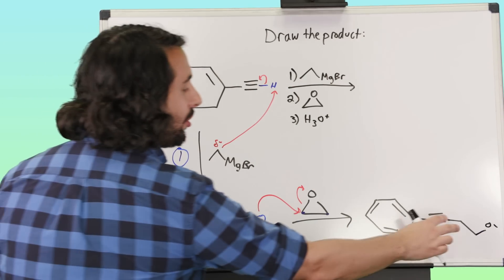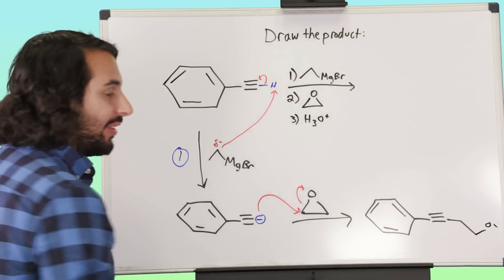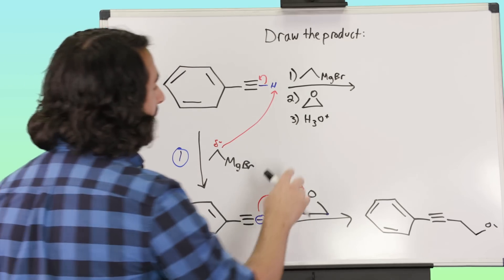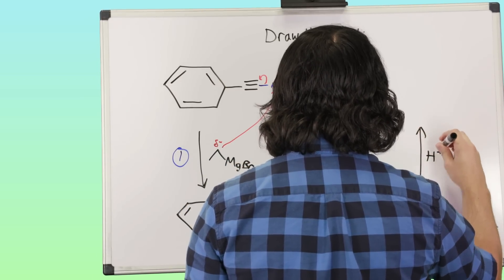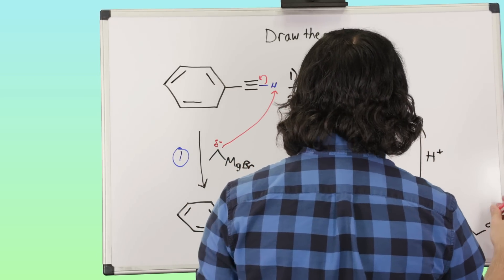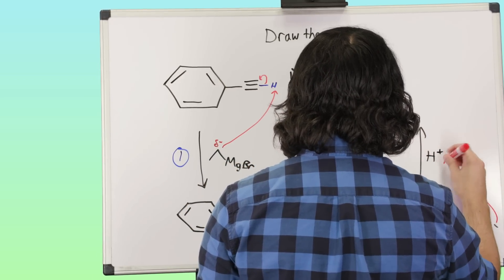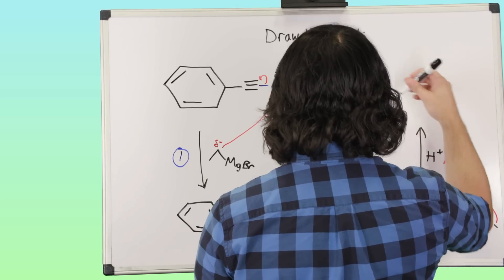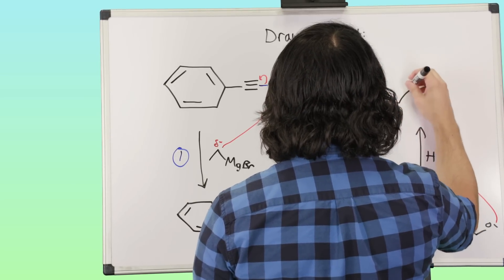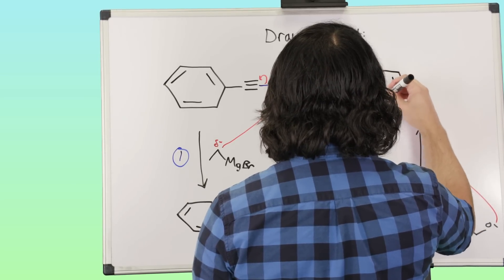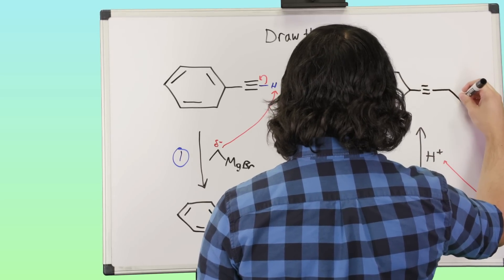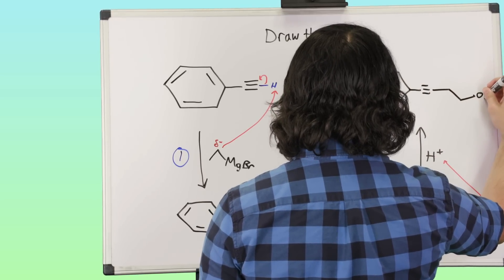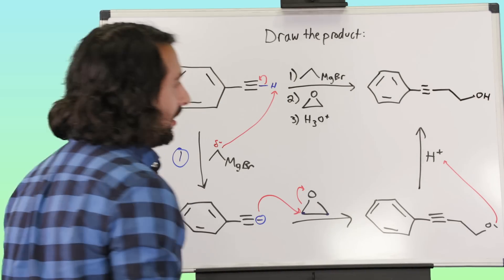So that's what happens, these two carbons used to belong to this epoxide there, and now lastly we're just going to do aqueous acidic workup, we're just going to protonate this oxyanion, and we are going to get our product and we will have this alcohol.